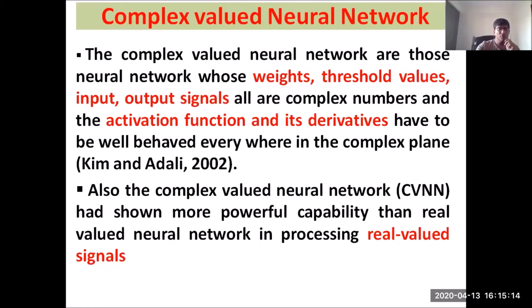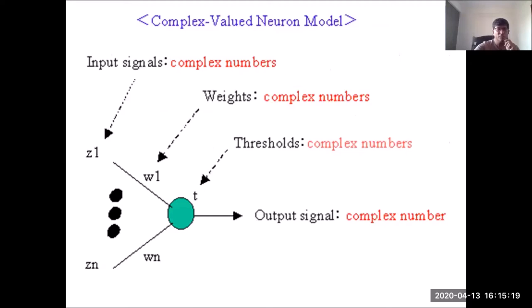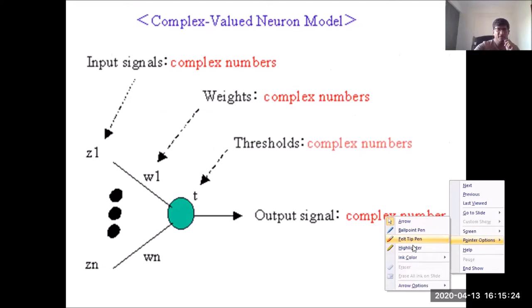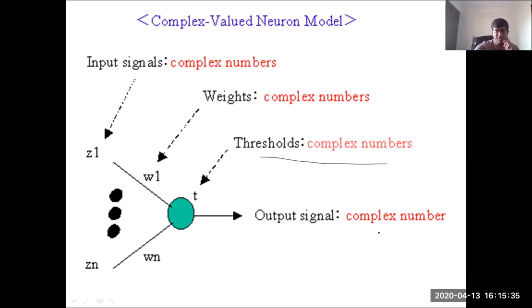The input signals would now be represented by complex numbers, the weights will also be represented by complex numbers, even the threshold values can be represented by complex numbers, and output signals also can be represented by complex numbers. However, we would not be changing the activation functions — only some kind of mapping would be required so that it can map these complex numbers from input to the output path.